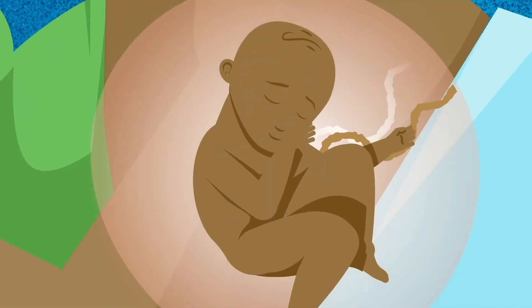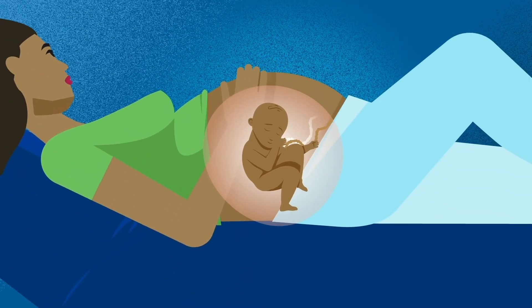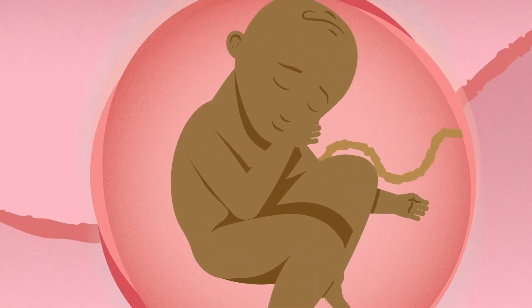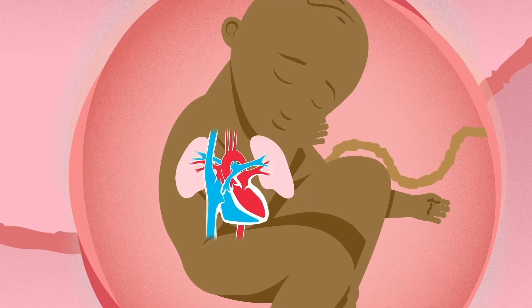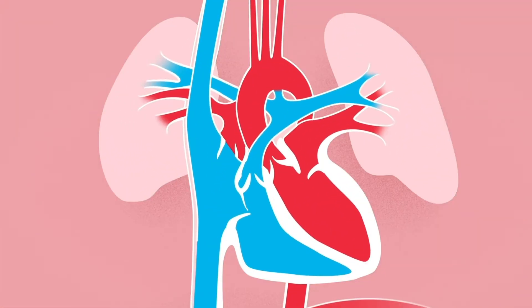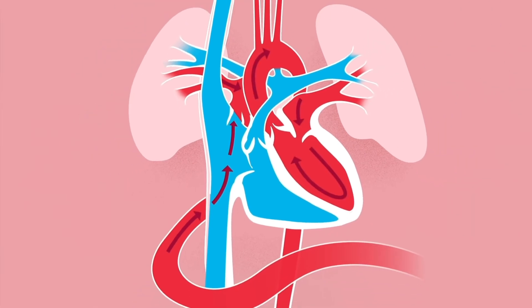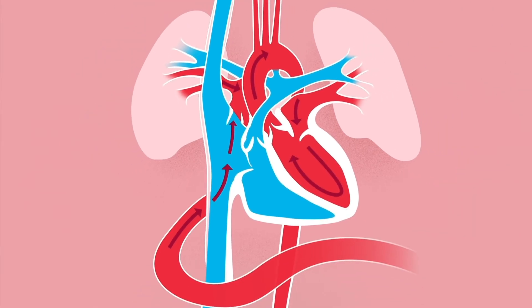The way the blood flows, called circulation, is different when the baby is inside the mother. There are two unique connections in the unborn baby's heart. The first connection is a hole between the right atrium and the left atrium. This hole allows blood that is rich in oxygen and nutrients from the mother's placenta to flow directly into the left part of the heart and then to the baby's head and body.